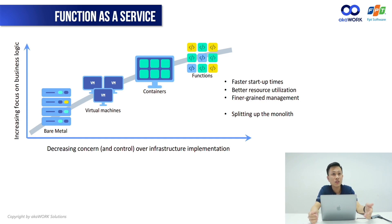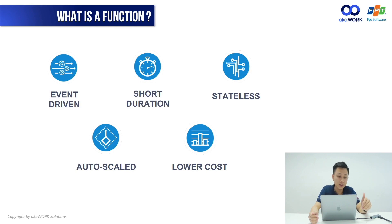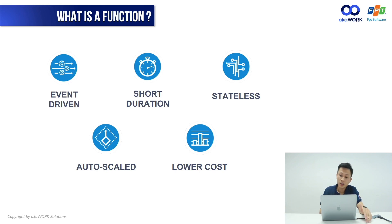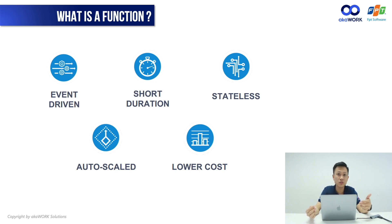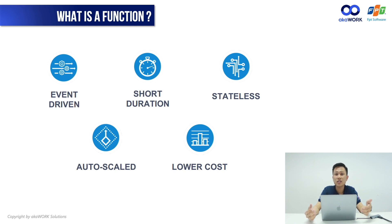So we will go over the characteristics of a function. The first is that it is event-driven — you need an event to come in to trigger the function to execute. It is also very short duration — it's not intended for long-running workloads. The function is stateless; all you are provided is computing resources. You don't need any storage associated with the function runtime. You will rely on external services to store state, or another way is by sending the state to trigger another function.